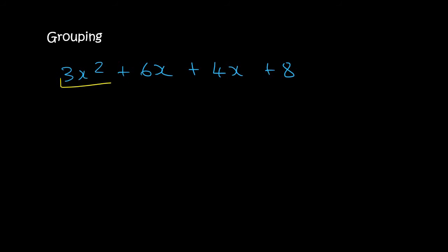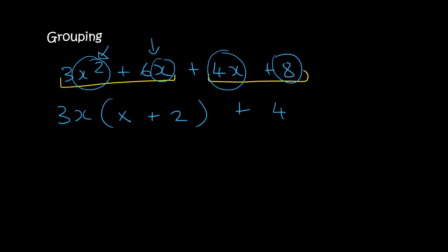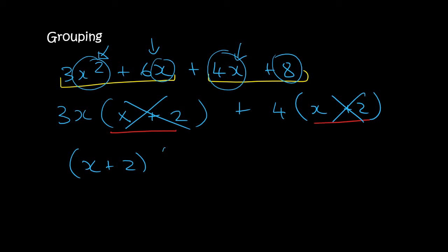Here's another one. We take these two terms and these two terms. In the first pair, the common factor is 3, and you can take out an x — this term has two x's, this one has one x. You'd be left with x plus two in the first bracket. The common factor in the second pair is 4, and you'd be left with x plus two. The brackets are the same, so we take out x plus two as a common factor, leaving 3x plus 4.